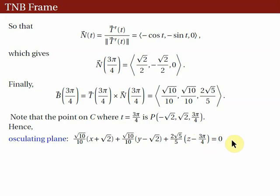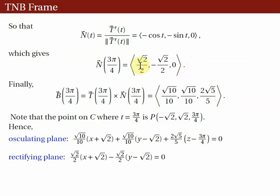We form the other two equations similarly. For the rectifying plane, the vector perpendicular to it is the unit normal vector N. The equation of the rectifying plane is: (√2/2)(x − (−√2)) + (−√2/2)(y − √2) + 0·(z − 3π/4) = 0. This is the equation of the rectifying plane.